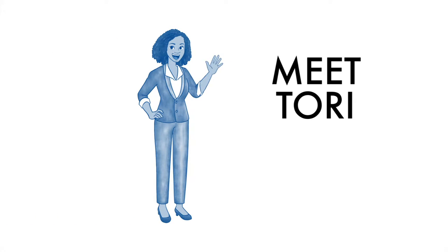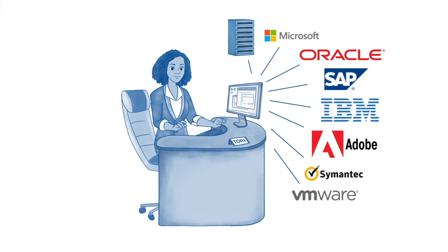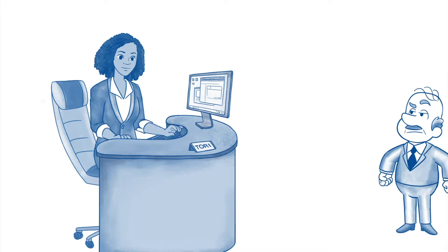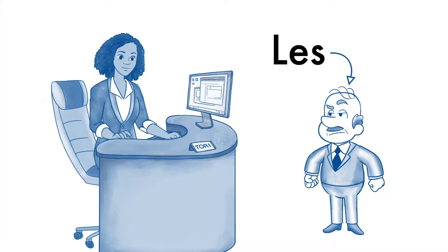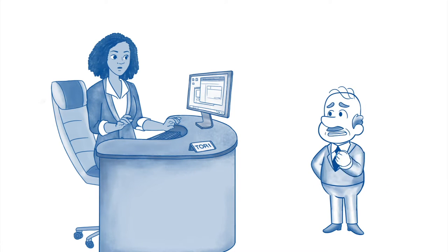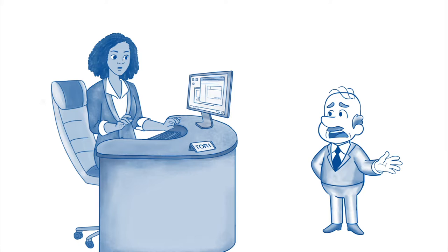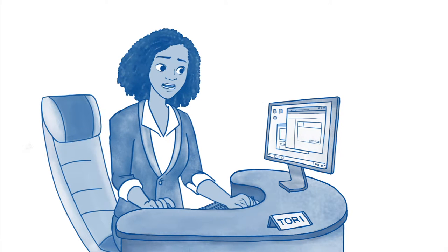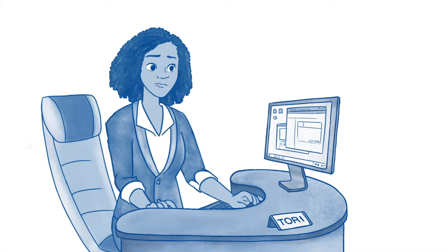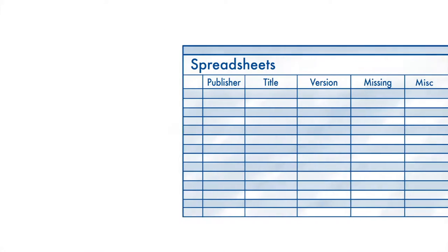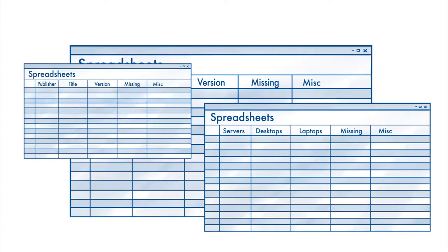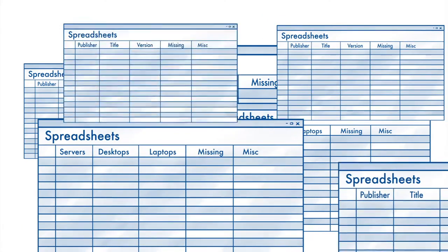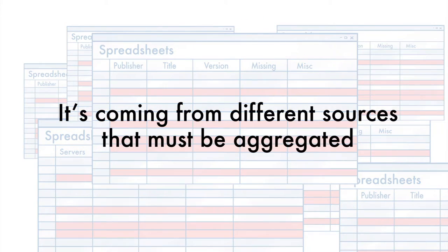Meet Tori. She's been put in charge of keeping track of hardware and software assets at Global Widget Co. And this is her boss Les. How am I going to get the right information? It takes a long time to track things manually in spreadsheets, and the data isn't always accurate — it's coming from different sources that must be aggregated.